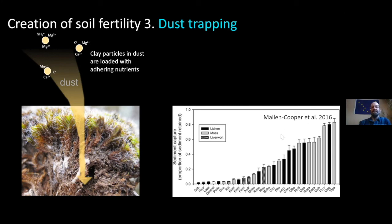There's some data on this. In the Mallon Cooper study, looking at bio crust organisms from Australia, most of the organisms are very well capable of trapping sediments that fall on them out of the sky. Some of the most prolific ones end up being mosses, which are shaded in light gray.